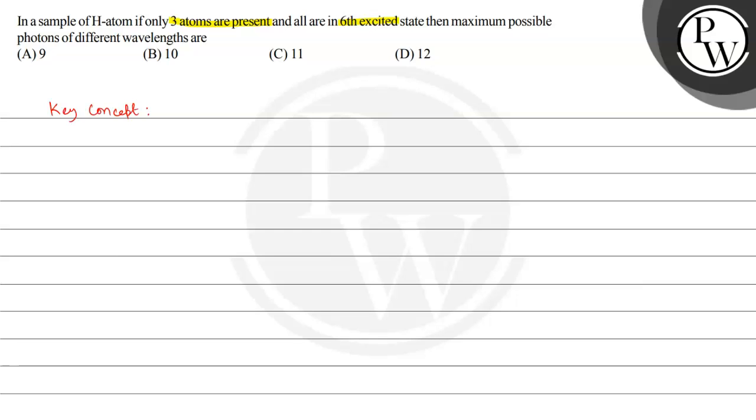Here is the key concept - hydrogen spectrum. Given is that three hydrogen atoms are in the sixth excited state.